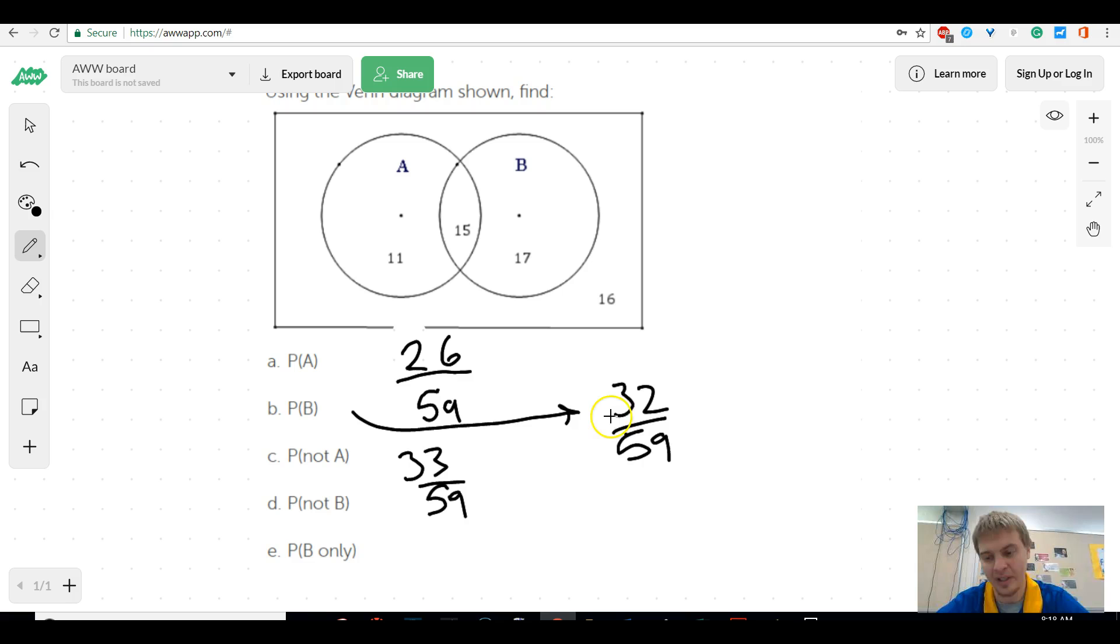So then we want not B, which again, you could think about as the opposite of this, or just look on the table, which would be 11 and 16, so 27 over 59. There we go.